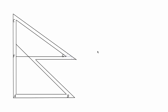Before proceeding, I recommend you watch my previous video on finding the width of this blue border and the various calculations. Today we are going to use those results. From the previous video, we will use: FZ equals AB equals 'a', and the length of CF equals a times (4/3 minus 1 over square root of 2).